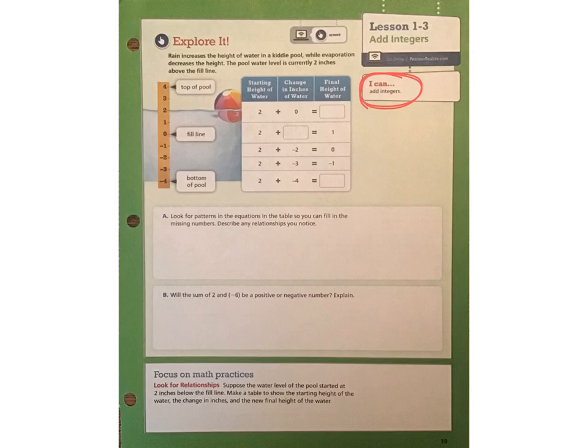So let's first take a look at the Explorer question. Rain increases the height of water in a kiddie pool while evaporation decreases the height. The pool water level is currently 2 inches above the fill line. You can see a ruler here on the left side of your page, and that ruler serves as a guide so that we know how deep is the pool, where's the top of the pool, and what's the fill line. In this case, the number negative 4 represents the bottom of the pool. The fill line is at zero, and the top of the pool is at a positive 4.